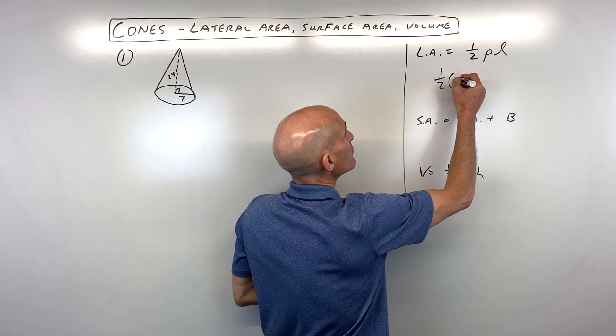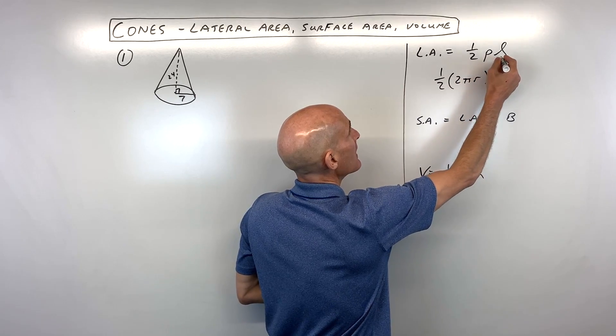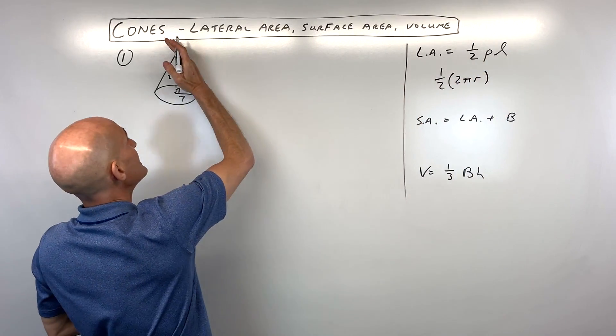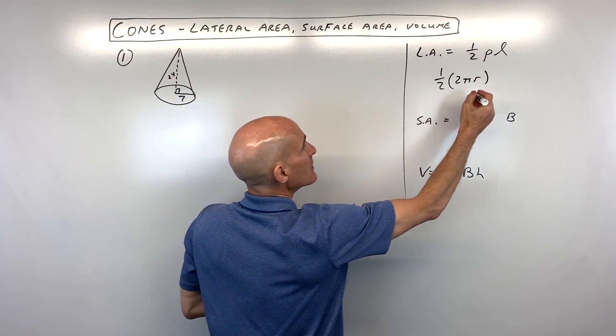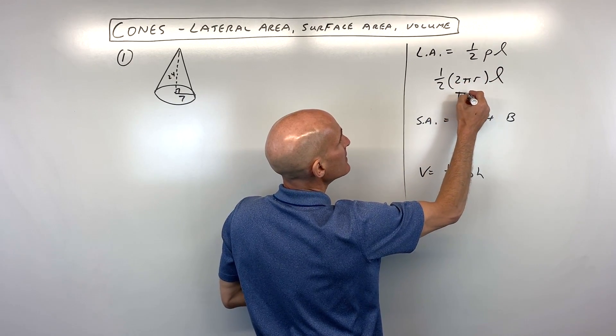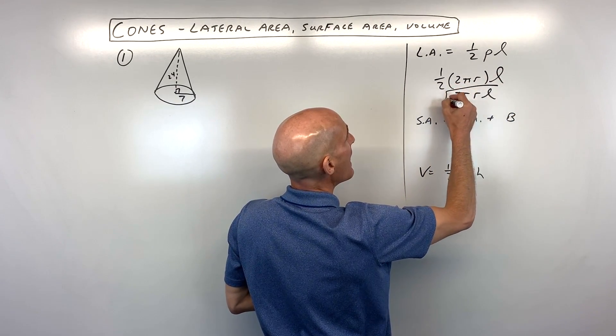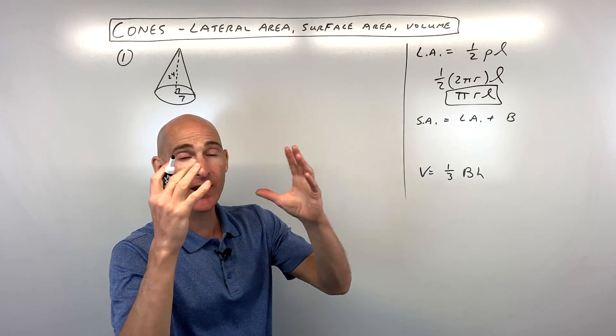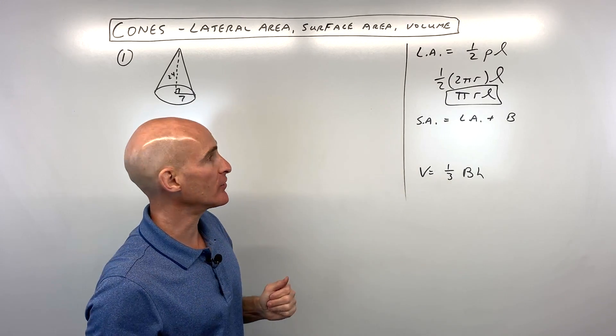So we can replace the perimeter with 2πr, and then l is the leaning height, the slant height here. You can see one-half times 2 is 1, so that just comes out to πrl for the lateral area or the sides of the cone.